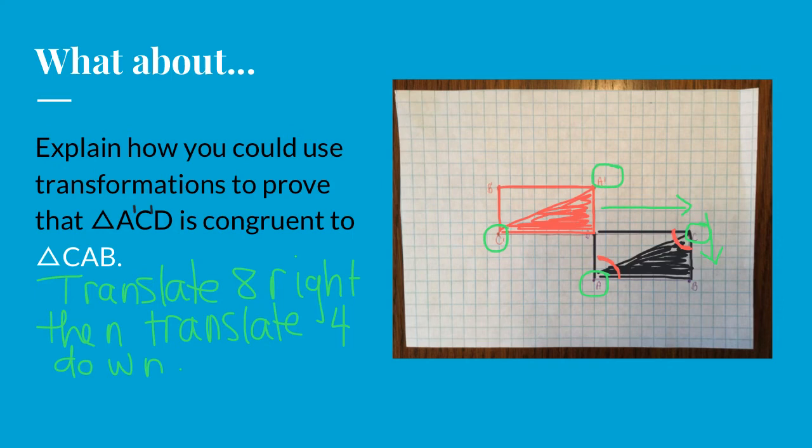And so this is the best I'm going to be able to do to show that triangle A prime, C prime, D is congruent to C, A, B.